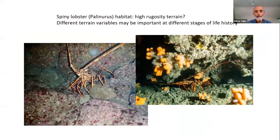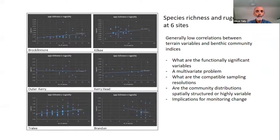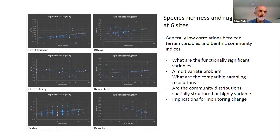This is typical crayfish habitat, but it might also vary according to different life stages of the animal. High rugosity may be very important in the early life history stages, which are cryptic and require very small hiding spaces for protection from predation, as opposed to the terrain requirements later when the animal is bigger. We begin to explore these relationships — in this case species richness and rugosity — across the six sites, and we do find some correlations, but they're quite weak.